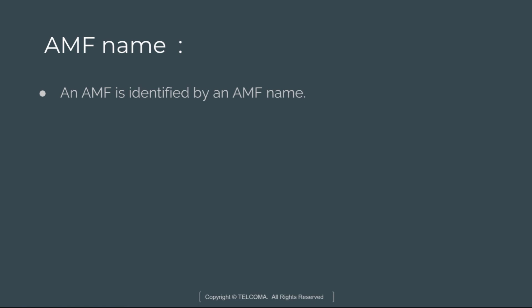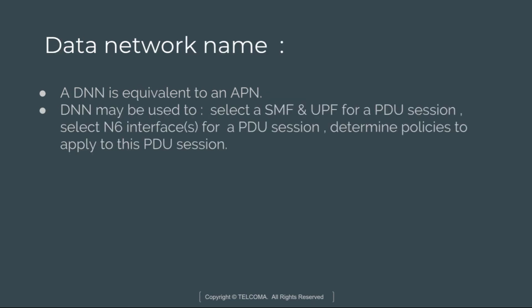AMF is identified by its name. The AMF name is a globally unique FQDN, with the structure of an AMF name as FQDN. The Data Network Name, or DNN, is equivalent to APN. DNN is used whenever we require to select an SMF or UPF for a PDU session, to select the N6 interface for the PDU session, and to determine policies to apply to the PDU session.